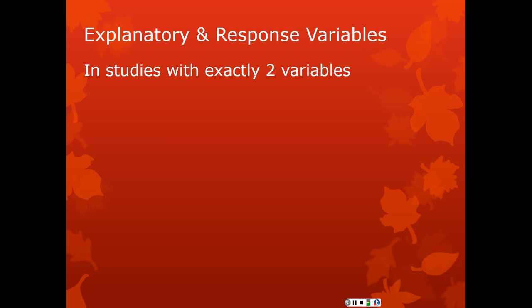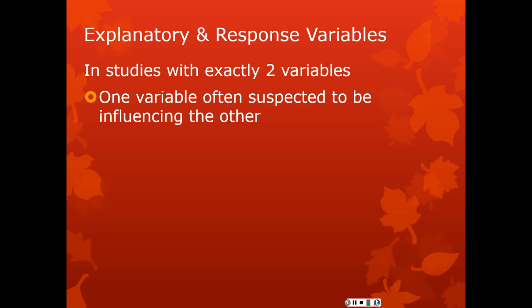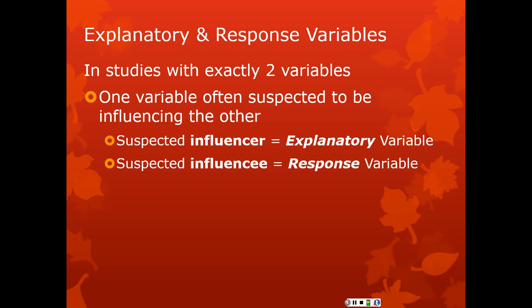Let's dive back into explanatory and response variables. Very frequently, you'll have a study with exactly two variables, or if it has more variables, a certain analysis is only two variables. Those two variables usually are playing different roles in a study. One variable is sometimes suspected or hypothesized to influence the other one. There's a clear causal chain. Variable one comes first, and then variable two changes. When variable one does something, then variable two responds. The first one, the one that's suspected to do the influencing, can be called the explanatory variable, and the second one can be called the response variable.